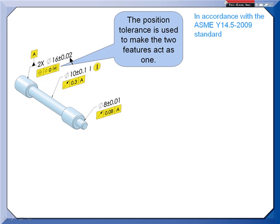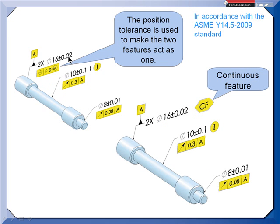The 2009 revision gives us another way to accomplish the same task. We now have the continuous feature symbol, or you could do it with a note, saying treat these two 16 millimeter diameters as though they were one feature of size.